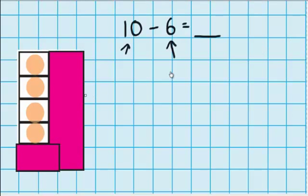So when you look at the 10s frame, you can see that there's 4 counters left. So 10 minus 6 equals 4.